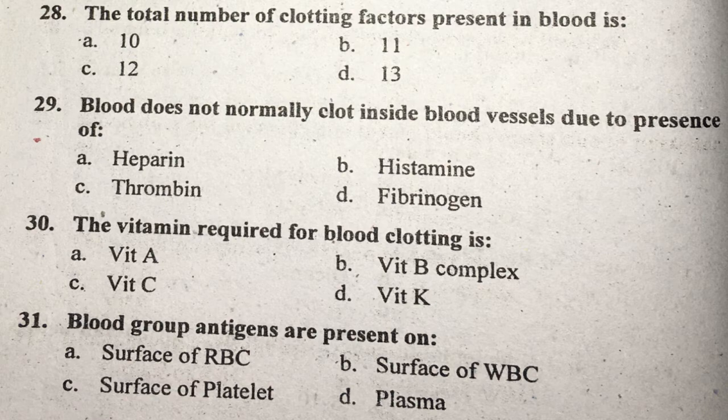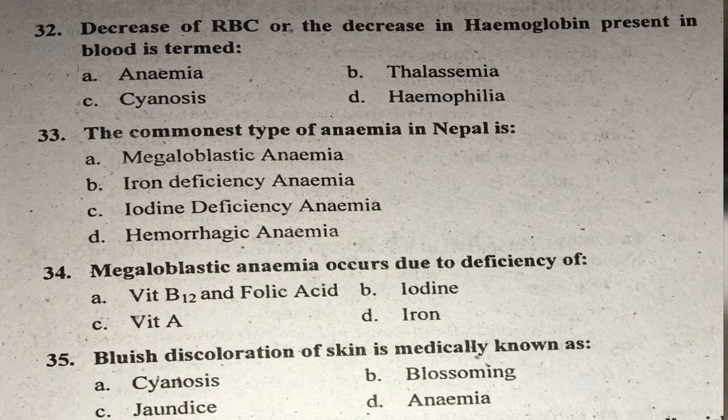Question number thirty-one: Blood group antigens are present on what? Blood group antigens are present on the surface of RBC. Right answer is A.